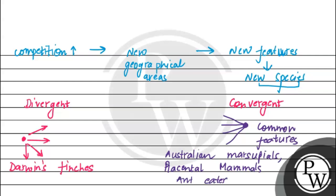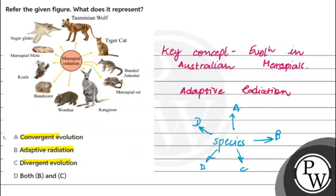Let's return to our question. The correct answer is adaptive radiation. Common marsupial ancestors gave rise to different species like the Tasmanian wolf, tiger cat, banded anteater, and others. Hence, the correct answer is option B — adaptive radiation. Hope you understood the answer well. Best of luck.